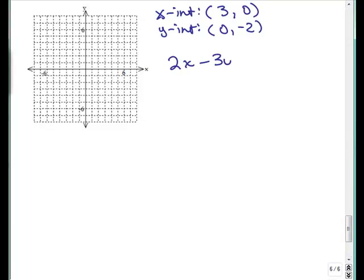So, let's plot the x intercept. That means it's on the x axis, 3, 0. And the y intercept is on the y axis, 0, negative 2.